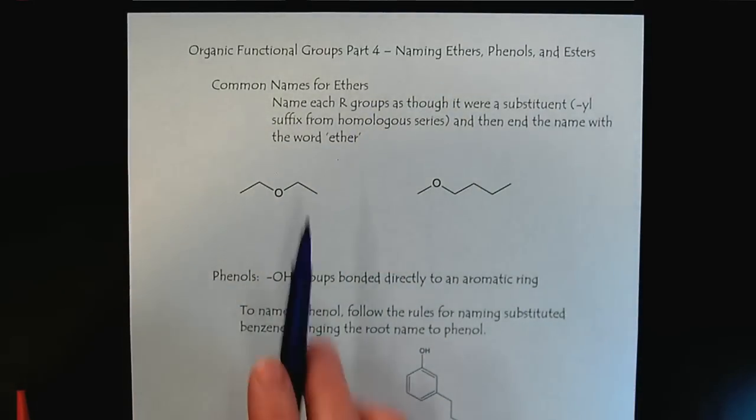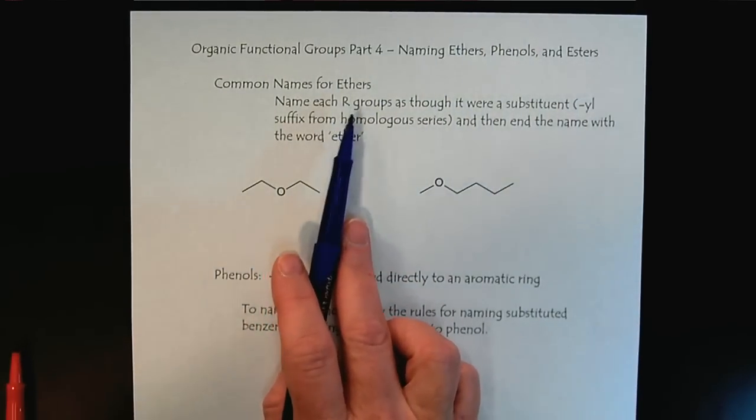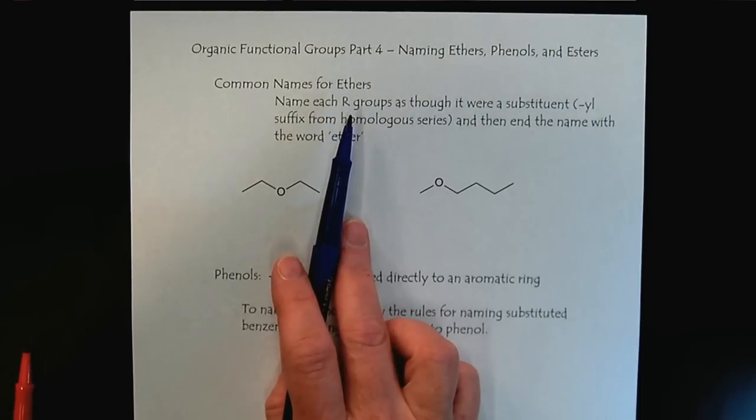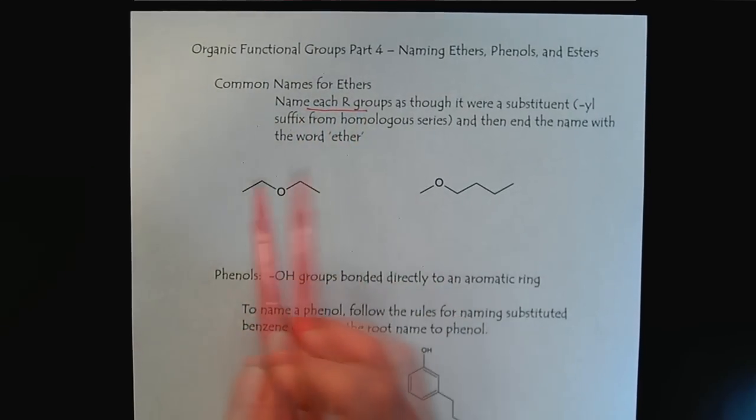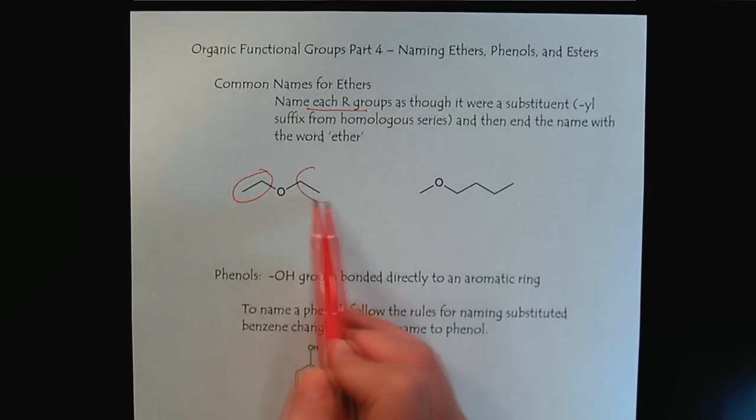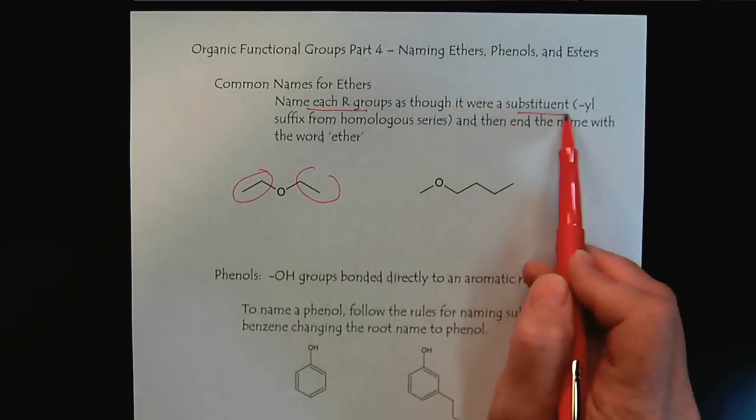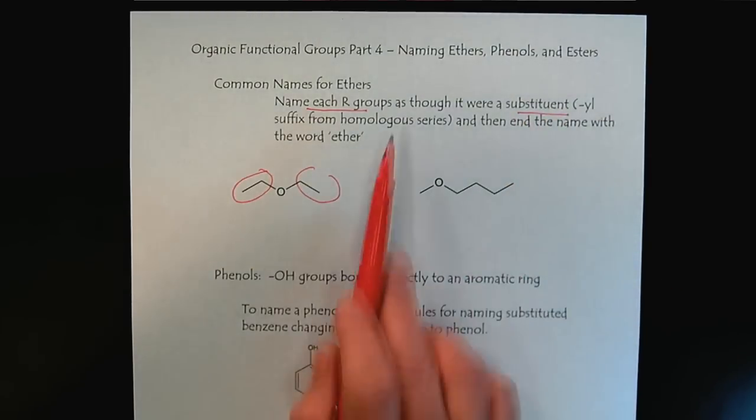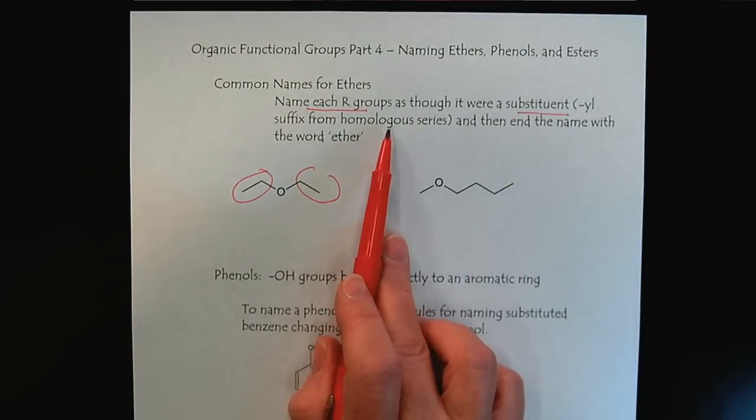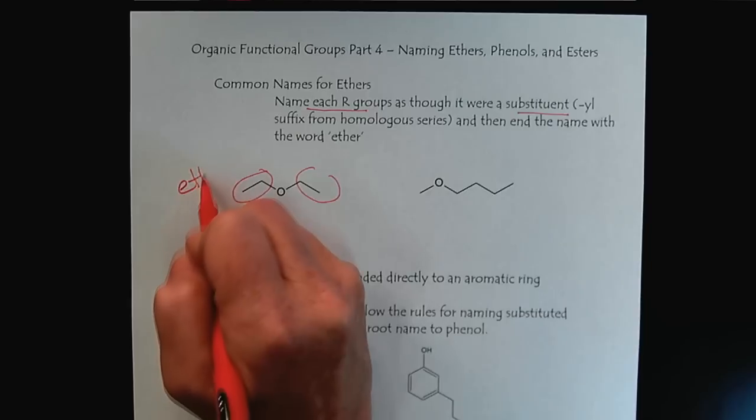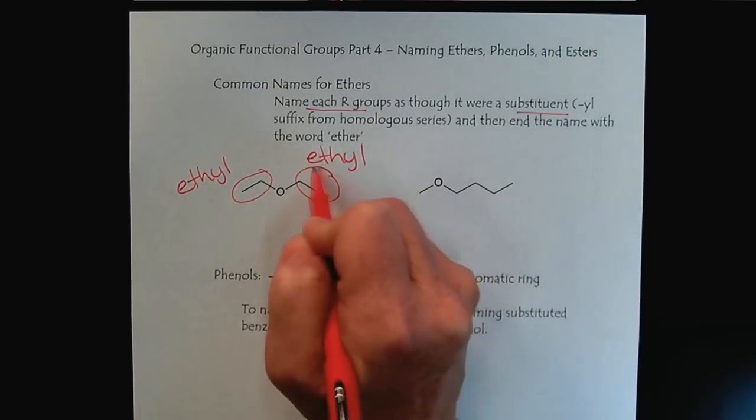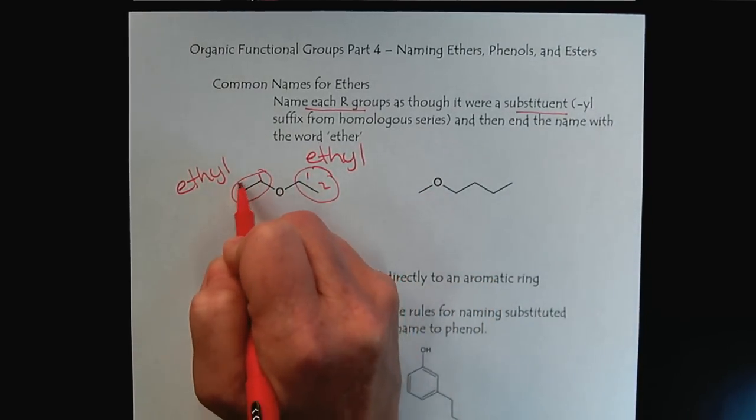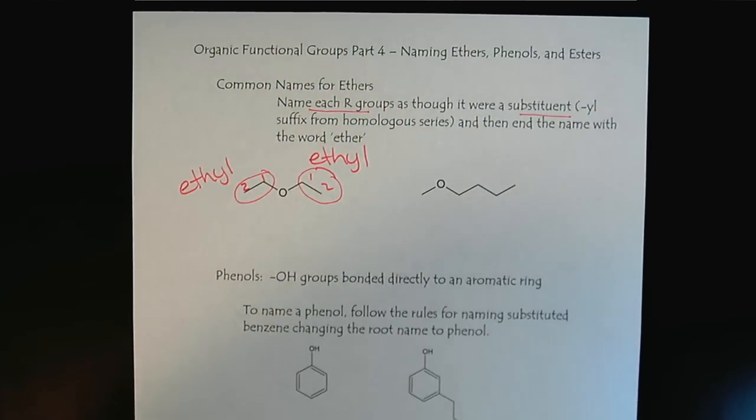The IUPAC name for ethers is very clunky, so for my classes we will just focus on the common names. It's very straightforward. We name the R groups as though they were branches or substituents using our homologous series names. So in this case we would have the two ethyl groups because there are two carbons on each branch.